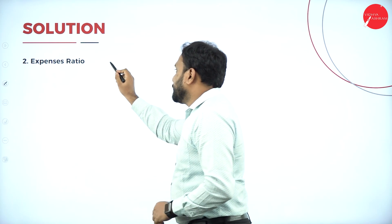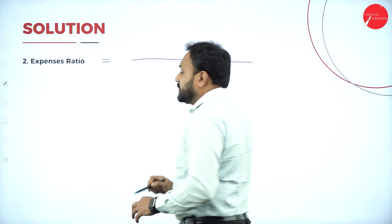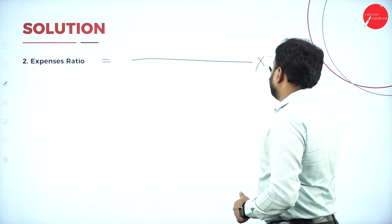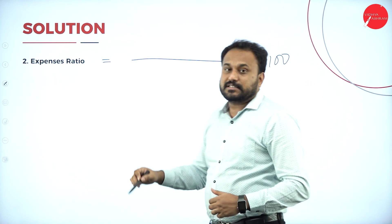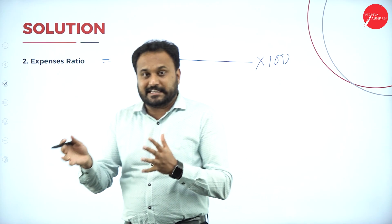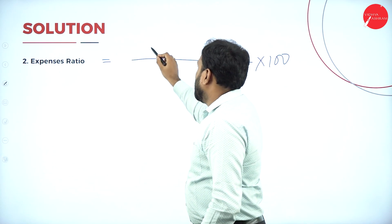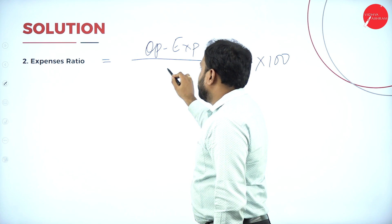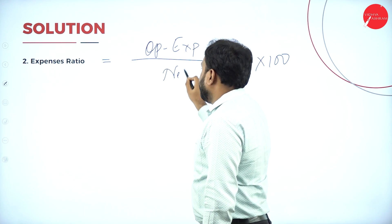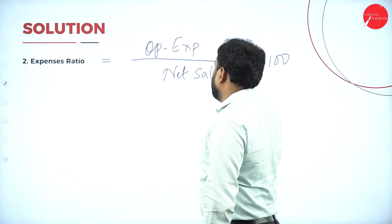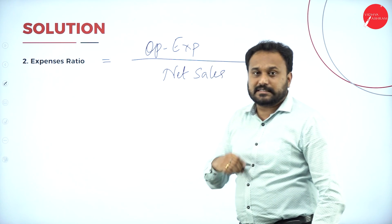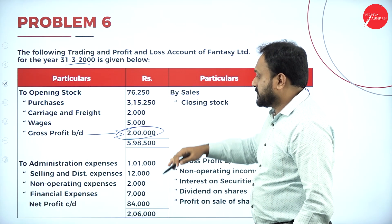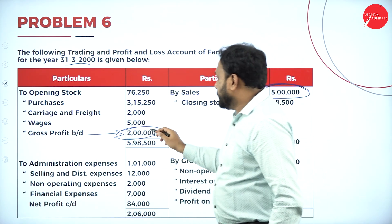Expenses Ratio formula: using the same numerator-denominator combination, into 100. Expenses here means Operating Expenses. So it is: Operating Expenses divided by Net Sales, into 100. We'll add all the expenses and then check the question.